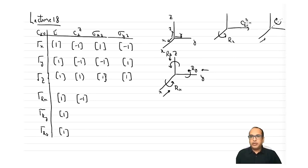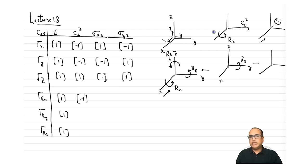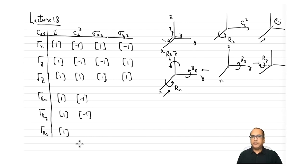For C2z acting on Ry: the Ry vector moves over after the C2z rotation, and when viewed from the positive y side it appears clockwise, so the character is also −1. You can try this by hand with a paper strip arrow cutout to confirm the direction change.